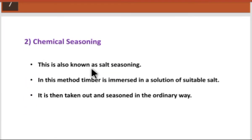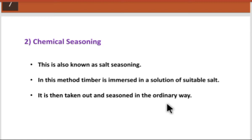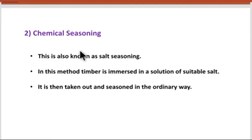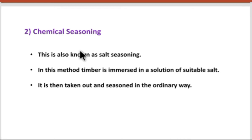Next is chemical seasoning, also known as salt seasoning. In this method, we immerse the timber in a suitable salt solution — we add salt into water and immerse the timber in that water — then take it out and season it in an ordinary way by natural air. This is also an expensive method.